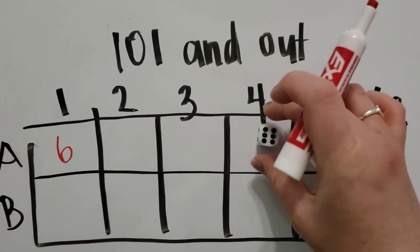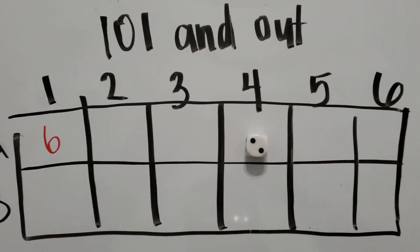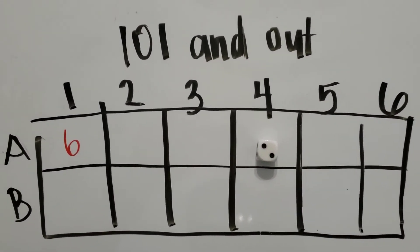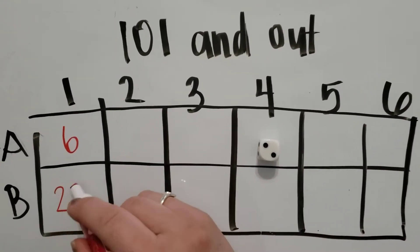Now, if I was team B, they would roll the dice and they just roll a two. I can either have that as a two or as a 20. And I want to put that as a 20.